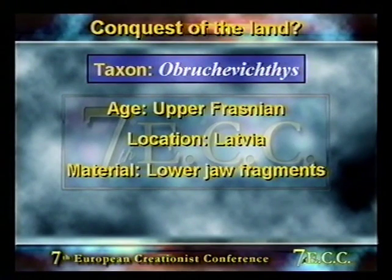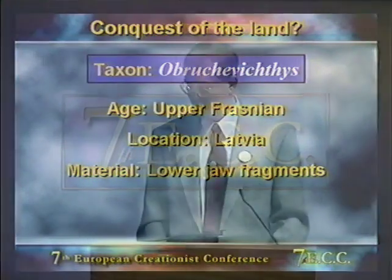Finally, Obruchevichthys is an Upper Frasnian form from Latvia — very little is known about it, just lower jaw material. Almost all of these genera, apart from Ichthyostega and Acanthostega, are single specimens, so very little is really known about these animals and much of it is fragmentary. Ichthyostega and Acanthostega, with more than one specimen available, are much better known.